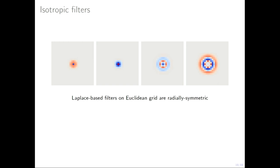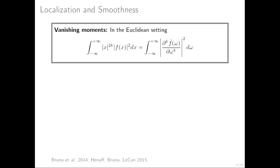The second problem is isotropic filters. The Laplacian operator is by definition rotation invariant in the Euclidean case, and locally permutation invariant on a general graph — it doesn't care about the order of your neighbors. So every filter on a grid will look radially symmetric, which is very limiting. The third deficiency is lack of localization. In classical Fourier analysis, there is a relation between the high-order moments of a signal and the high-order derivatives of its Fourier transform. Spatial localization requires the Fourier transform to be smooth. We can impose localization in space by requiring that the Fourier transform is smooth.